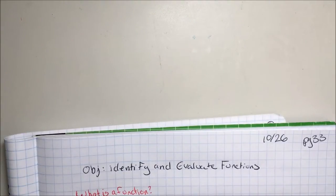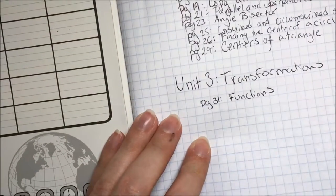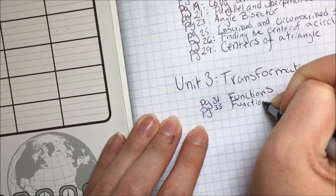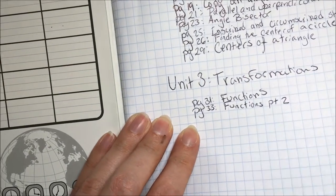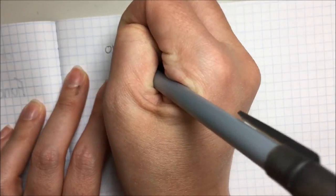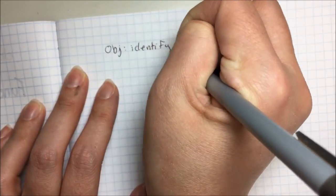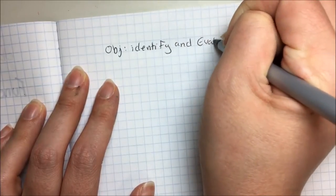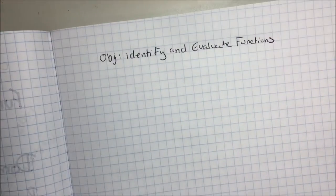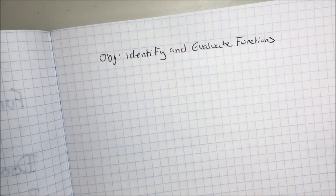The objective for tonight is to identify and evaluate functions. We're going back to another great day of notes, working on page 33, Functions Part 2. Today we're going to be talking about what a function actually is, how functions relate to transformations, and something called a mapping.